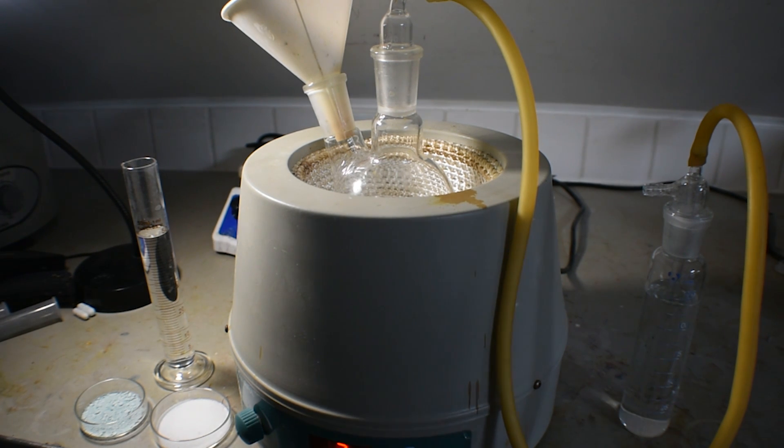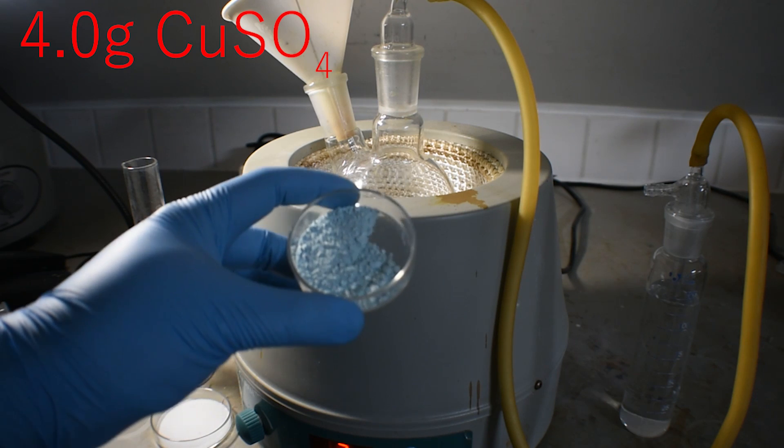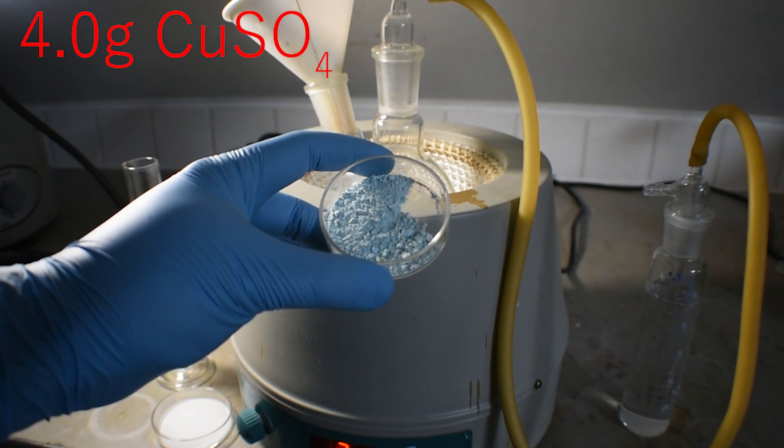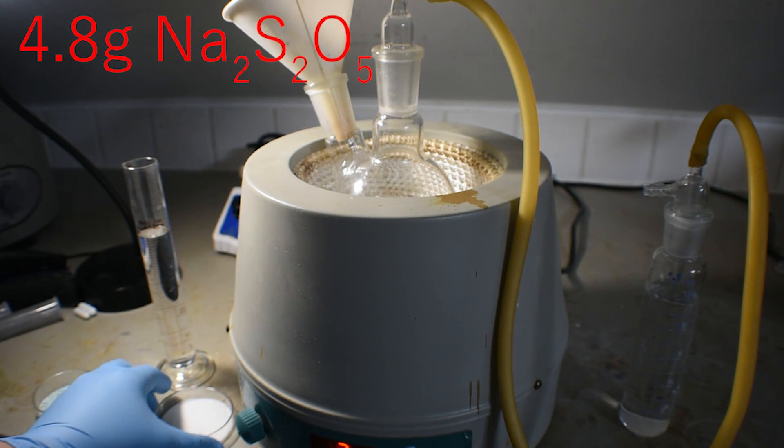Now let's see what we'll need to make this salt. First, I have 4 grams of copper 2 sulfate, which you can see in this dish here. Secondly, I have 4.8 grams of sodium metabisulfite in this dish,